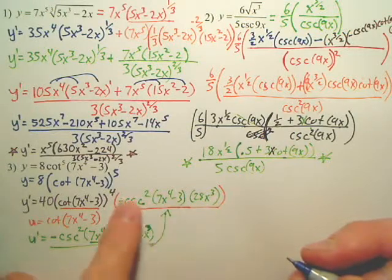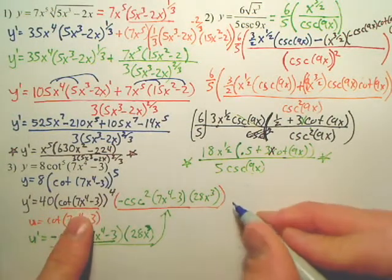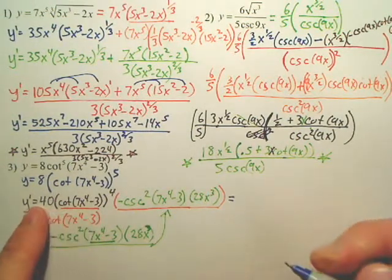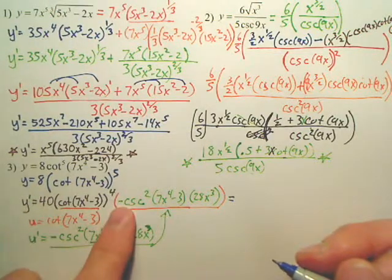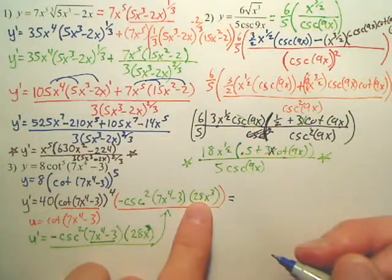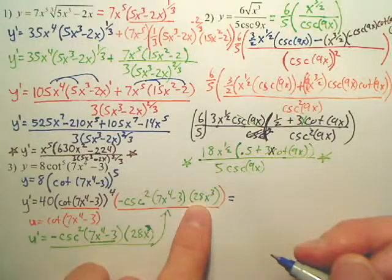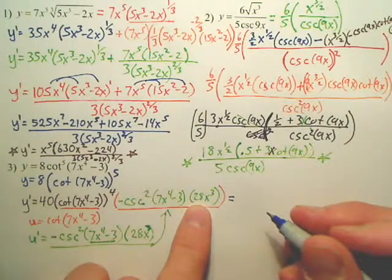Simplifying all of this, it looks like we have 40 times a negative times a 28. Ooh. Actually, it's not that bad. I think it's 1120. Is it 1120?